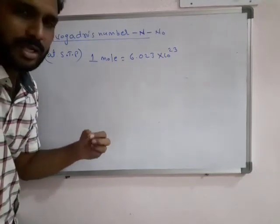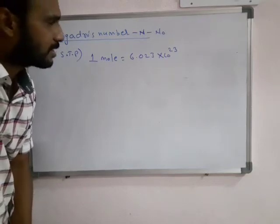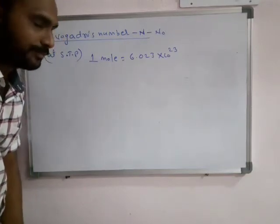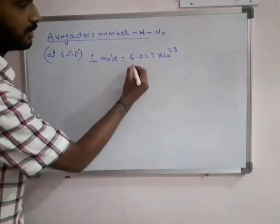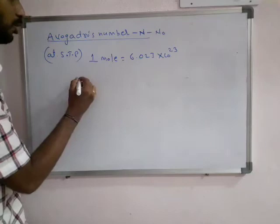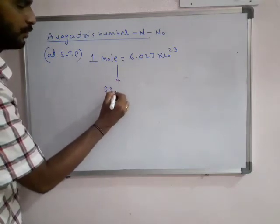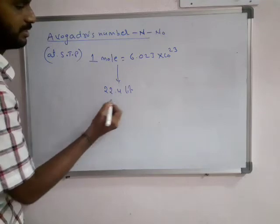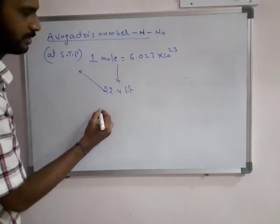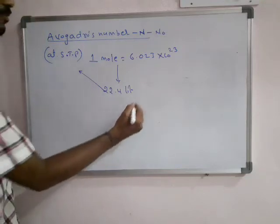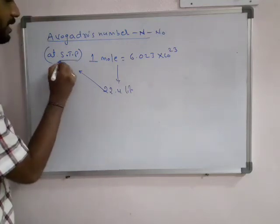Whether it is electrons, protons, neutrons, ions, molecules, or atoms — 1 mole number equals 6.023 into 10 power 23. This is called Avogadro's number. Actually, 6.023 into 10 power 23 molecules occupies 22.4 liters, applicable only at STP. So 1 mole equals 22.4 liters; if you take 1 bar, it is somewhat different, but generally we use STP.